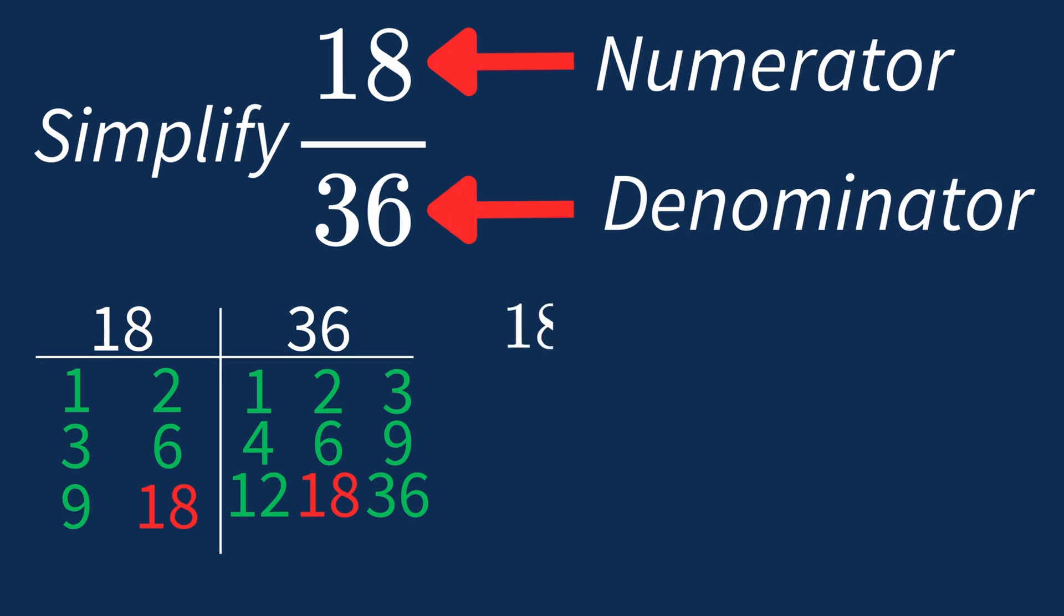Dividing the numerator 18 by 18 gives us 1. Dividing the denominator 36 by 18 gives us 2. So after dividing, the simplified fraction is 1 over 2.